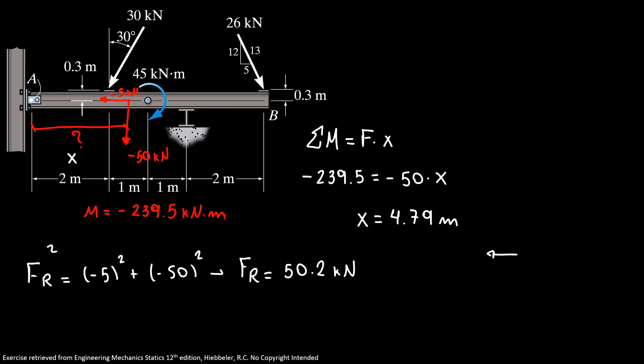And to find our angle, here minus 5, here is our 50.2, but we're gonna find tangent of theta. We know that the tangent of theta equals 50 over 5, so our theta equals 84.3 degrees.